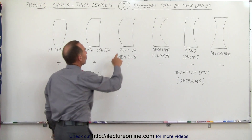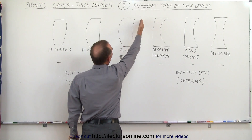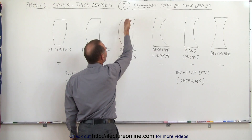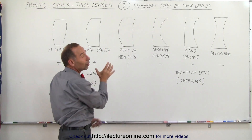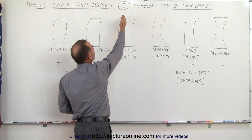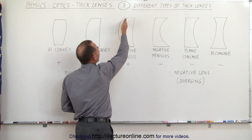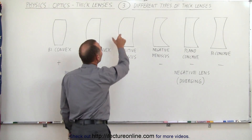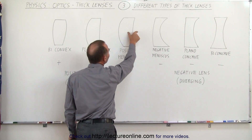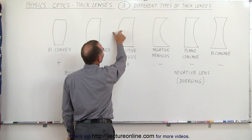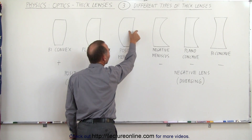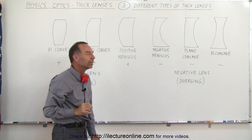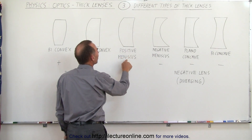In this case, one side is convex and the other side is concave. Notice that the convex side has a much smaller radius of curvature, and the concave side has a much larger radius of curvature. That means the convex side will have a greater effect on bending light. Since the convex side causes light to converge and the concave side causes it to diverge, and the convex side is stronger, together they still act like a converging lens — so this is called a positive meniscus lens.